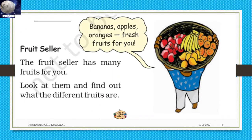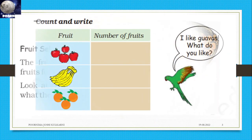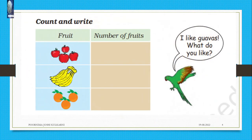Fruit seller. The fruit seller has many fruits for you. Look at them and find out what different fruits are there: apple, banana, mango, oranges are there. In the fruit basket, count and write. How many apples are there? Four. How many bananas? Five. Then oranges? Three.